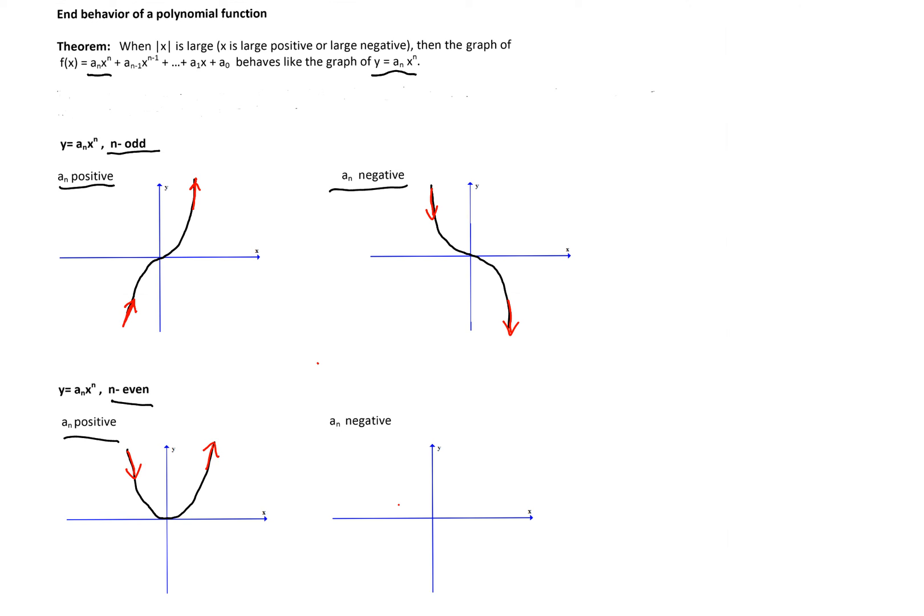When n is even and a_n is negative, the graph looks like an inverted or reflected square function. So we'll start this graph going down from above and it will end the graph going down as well.